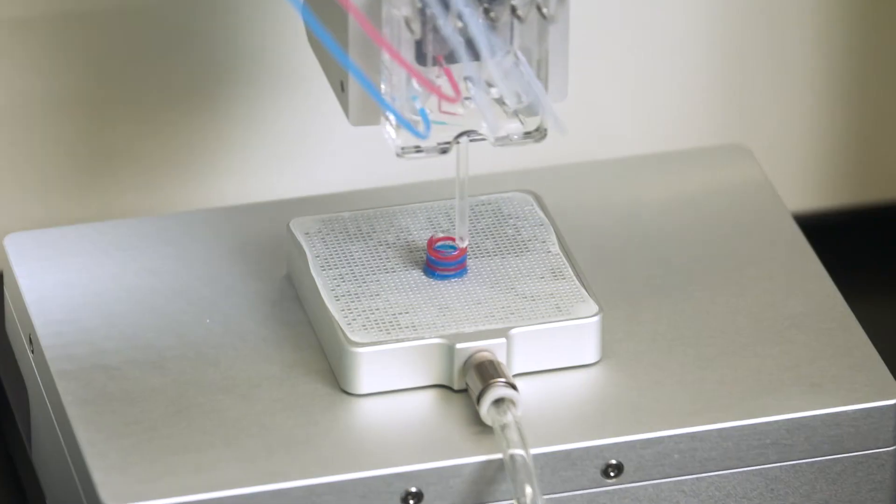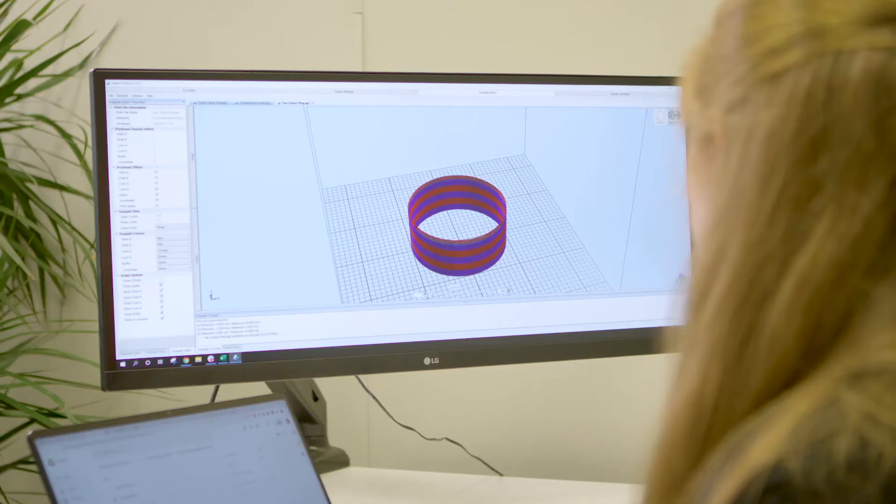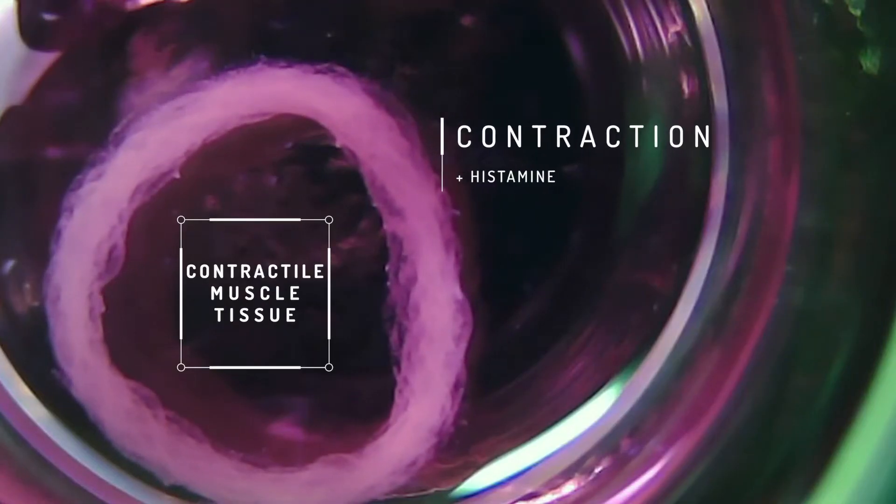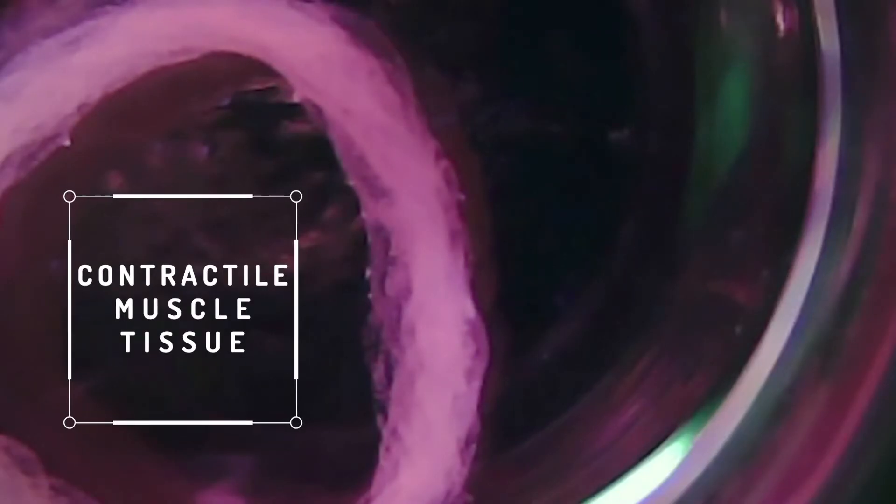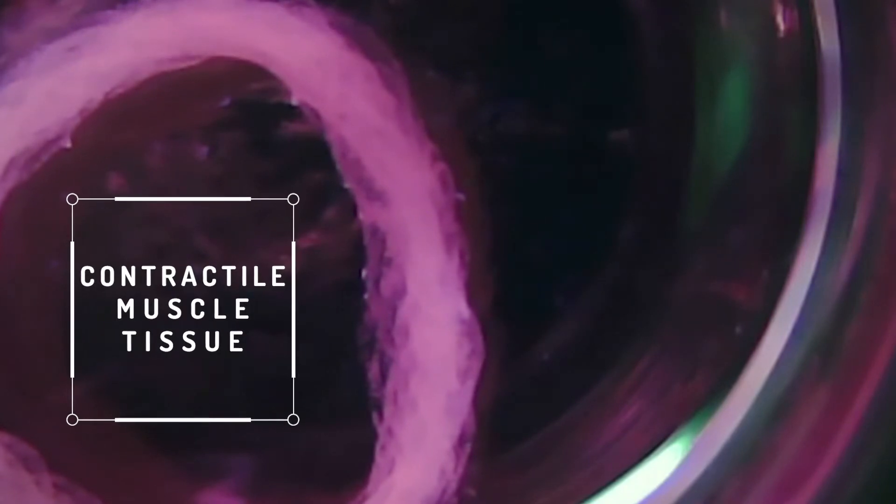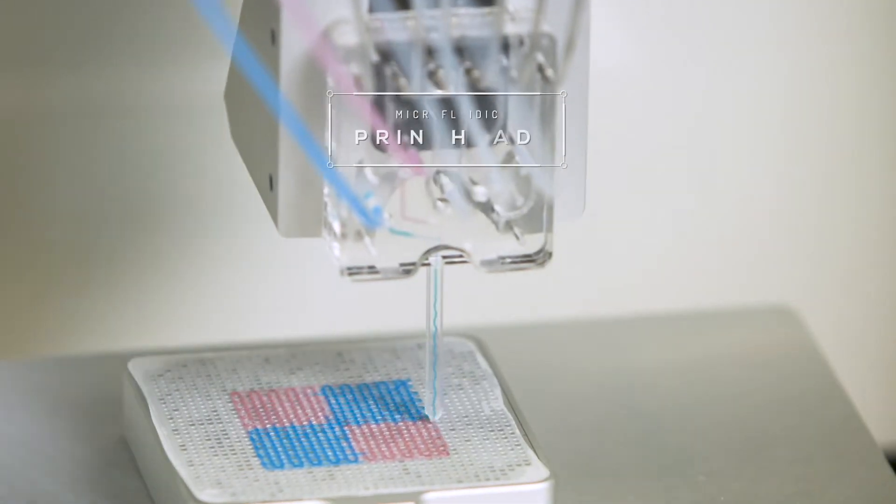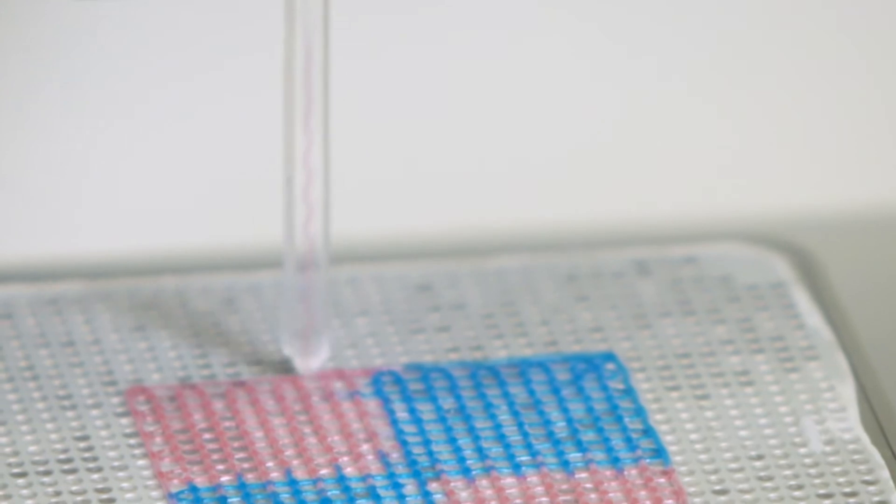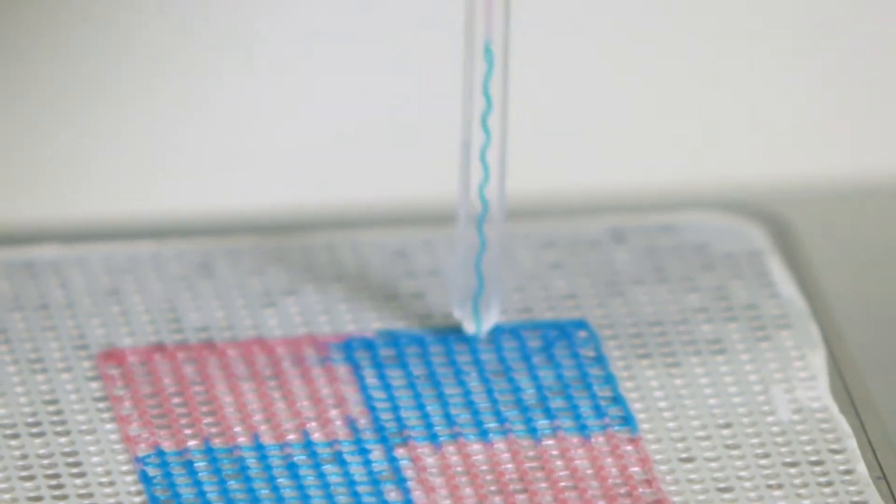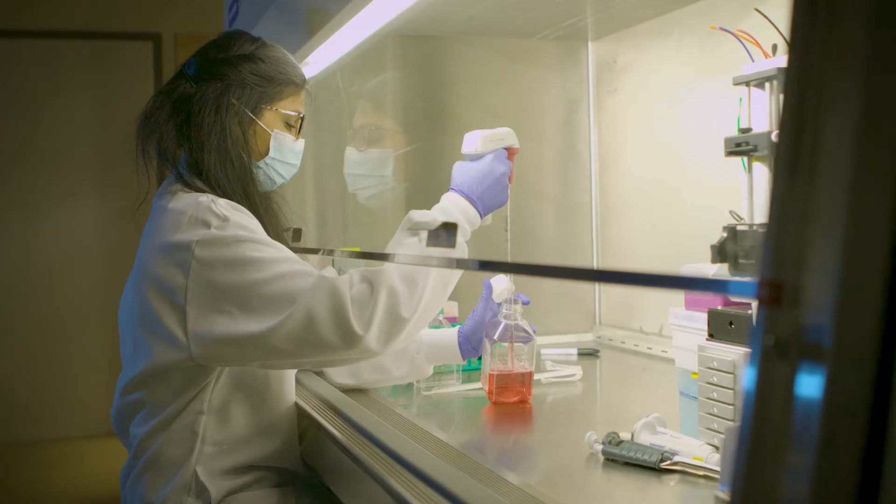Aspect Biosystem's microfluidic 3D bioprinting technology patterns cells and biomaterials into functional tissue-like structures. At the heart of the technology are Aspect's microfluidic printheads, which dispense cell-containing fibers—the building blocks of bioprinted 3D constructs.